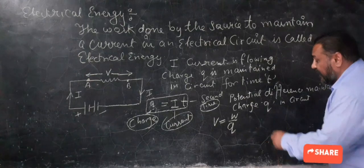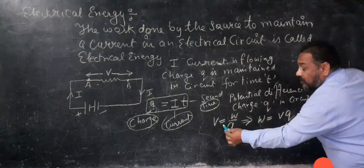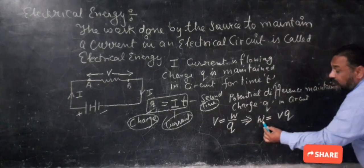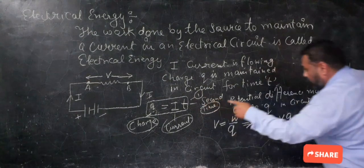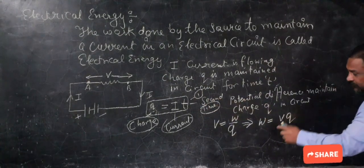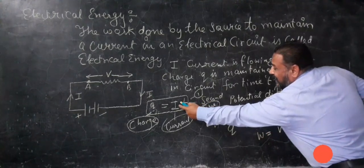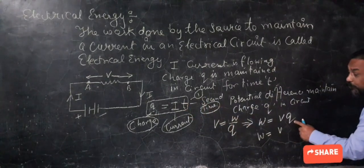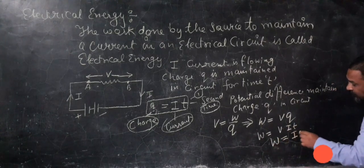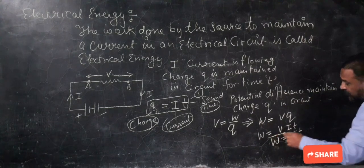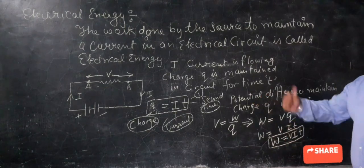From the relation V equal to W over Q, we get W equal to V times Q. Now substituting Q equal to I T, we get W equal to V I T. This is the relation for the work done in the electrical circuit.